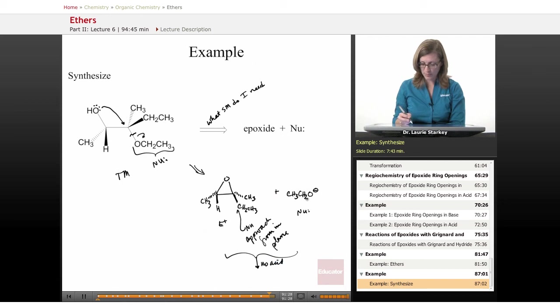Which means the ethoxy group would go where? It would go to the less sterically hindered carbon. So, what product would I get? I would get the product where my ethoxy group adds to the carbon on the left, and the alcohol would end up on the carbon on the right.